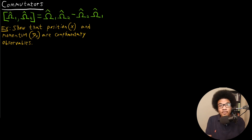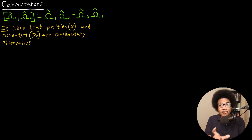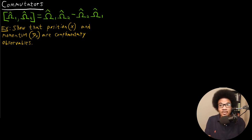In a previous video, we introduced complementary observables and discussed how those observables will have operators that don't commute, and that we could quantify how complementary these operators are to one another using commutators. We would evaluate the commutator to show the different outcomes of using these operators in different orders.